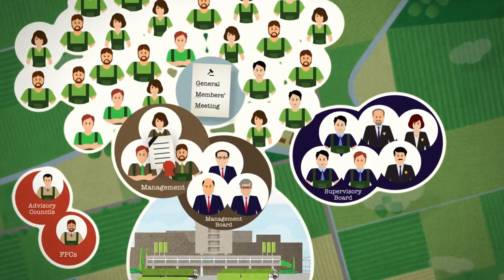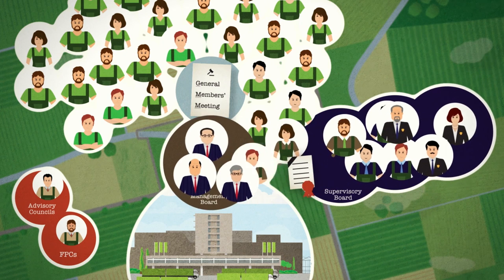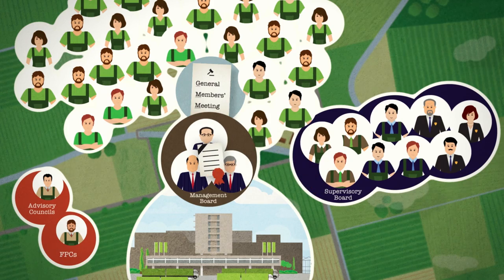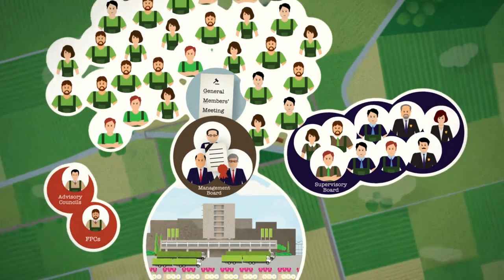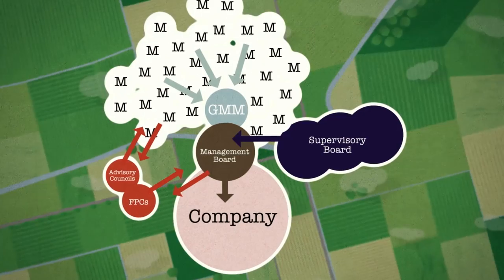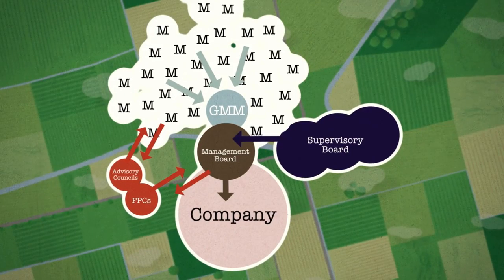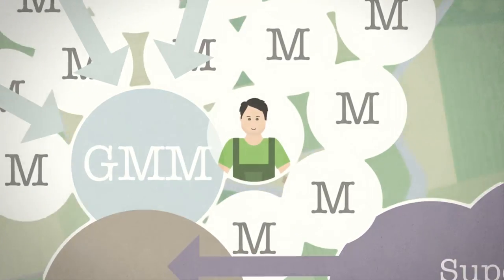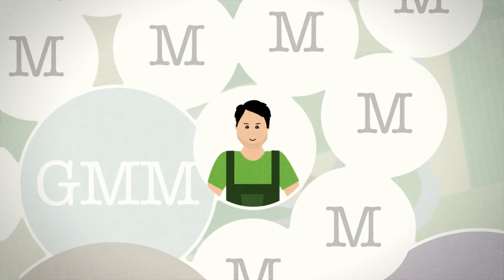In the next phase, the board of members united with the supervisory board, and it was decided to leave the statutory responsibility of the management to the management board. And that's the structure of Rosegrower John's Cooperative.